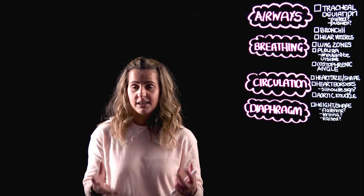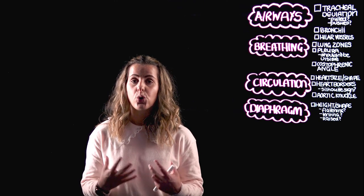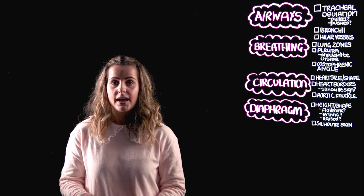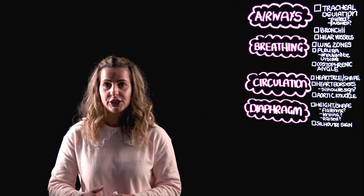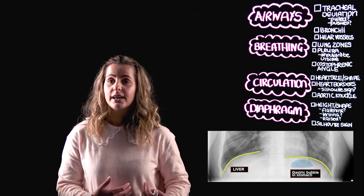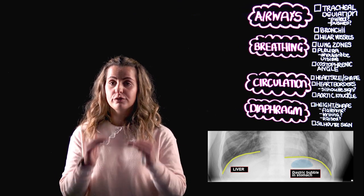If you trace each hemidiaphragm from lateral to medial and lose one of them, the loss of this diaphragmatic outline may indicate fluid, consolidation or collapse of the adjacent lung's lower lobe — this is the silhouette sign of the hemidiaphragms. You might also see air below the diaphragm: if on the right side, causing visible separation from the liver, seek urgent review by a senior colleague. On the left side, check for the gastric air bubble, which is normal below the diaphragm in the erect position, as air floats to the top.